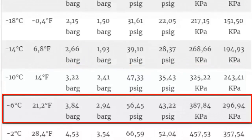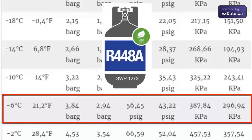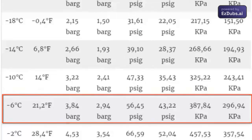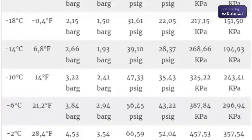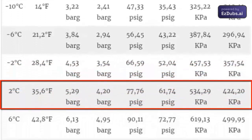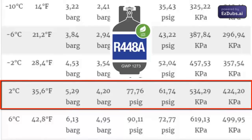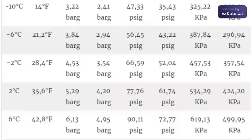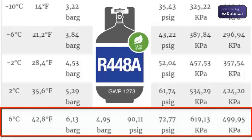4. To achieve minus 6°C (21.2°F) in the evaporator, a low gauge pressure of 2.94 bar, equivalent to 43.22 psi or 296.94 kPa is needed. 5. To achieve minus 2°C (28.4°F), a low gauge pressure of 3.54 bar, equivalent to 52.4 psi or 357.54 kPa is needed. 6. To achieve 6°C (42.8°F), a low gauge pressure of 4.95 bar, equivalent to 72.77 psi or 499.95 kPa is required.